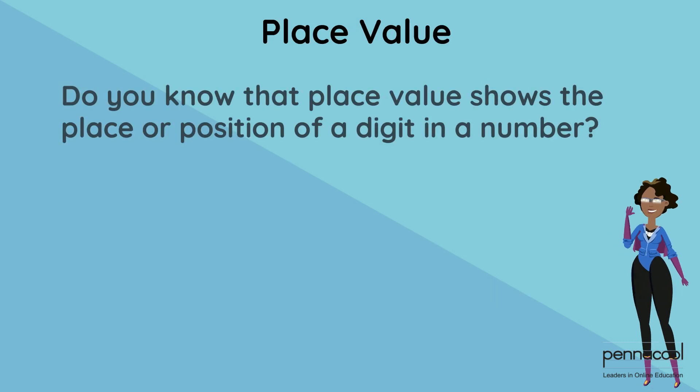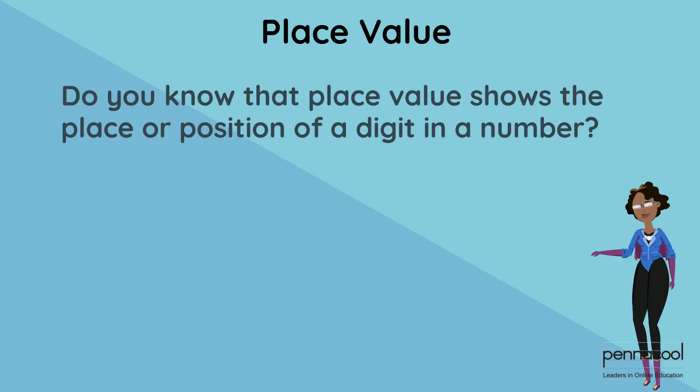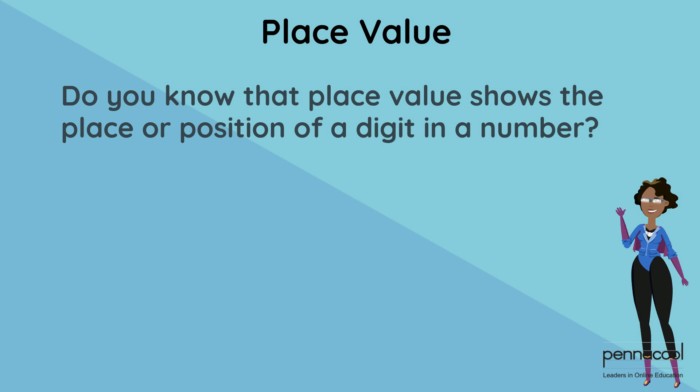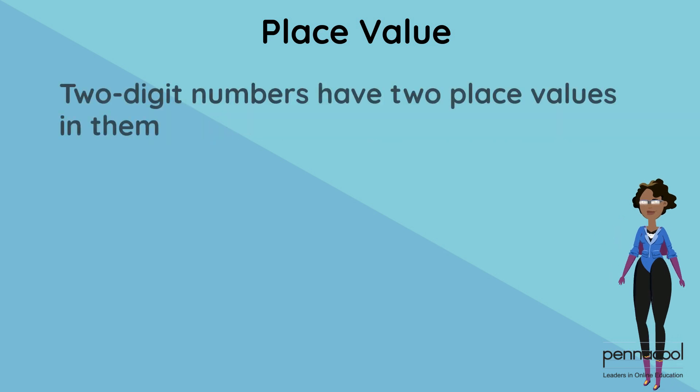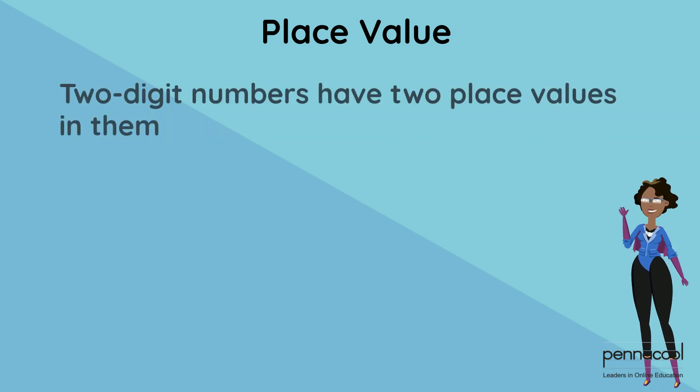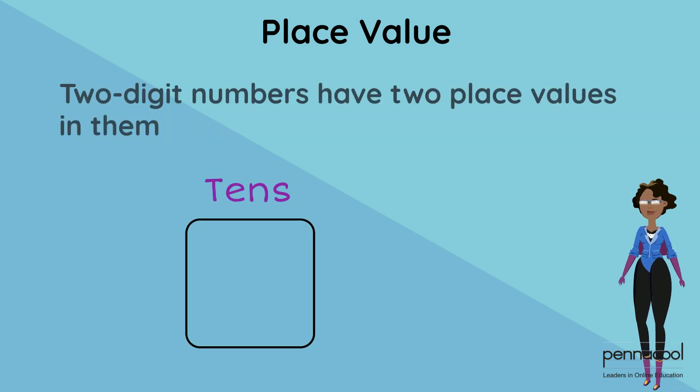Do you know that place value shows the place or position of a digit in a number? Two-digit numbers have two place values in them: tens and ones.